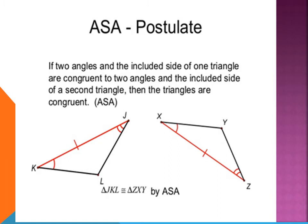Here, KJ is equal to XZ. Angle K is equal to angle X and angle J is equal to angle Z. The markings on the angles show that the angles are equal to each other. Now, as you see, KJ is the included side between angle K and angle J, and XZ is the included side between angle X and angle Z.